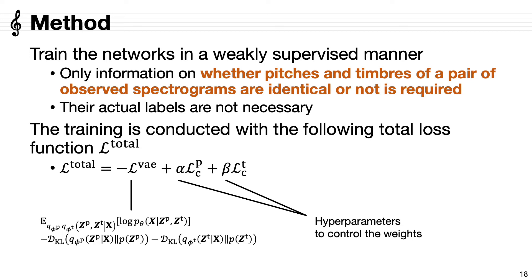Finally, we train the networks in a weakly supervised manner where only information on whether pitches and timbre of a pair of observed spectrograms are identical or not is required. Their actual labels are not necessary. The training is conducted with the total loss function combining the VAE loss and the contrastive losses. Alpha and beta are the hyperparameters to control the weights of the two contrastive losses. If you would like to know further details, please check our paper.